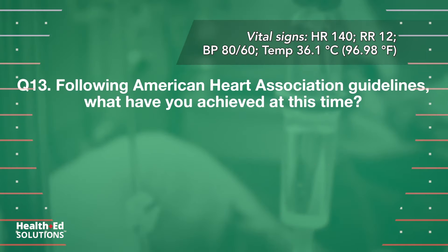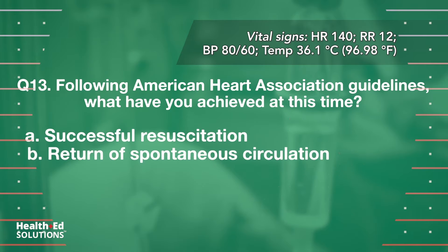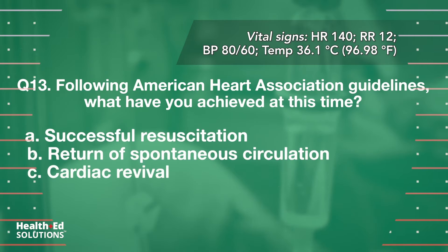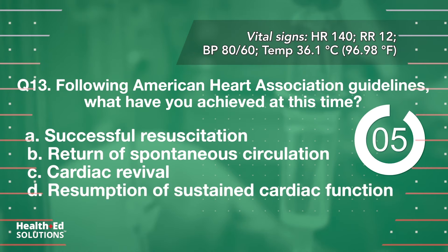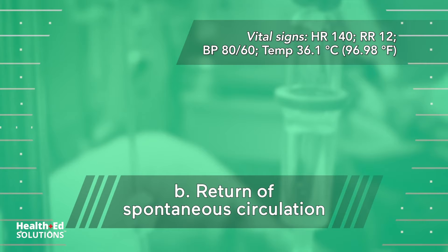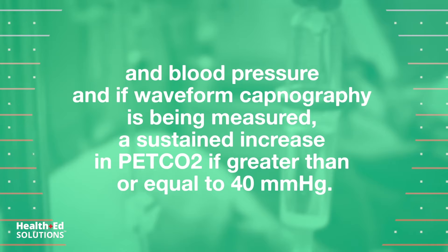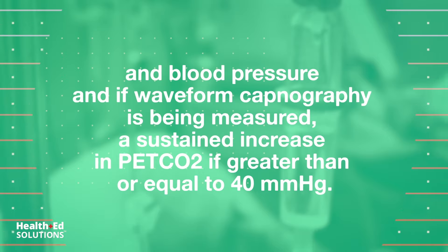Question 13: Following American Heart Association guidelines, what have you achieved at this time? A. Successful resuscitation. B. Return of spontaneous circulation. C. Cardiac revival. D. Resumption of sustained cardiac function. Correct answer B: Return of spontaneous circulation. American Heart Association guidelines suggest return of spontaneous circulation if a cardiac arrest patient has regained a pulse and blood pressure, and if waveform capnography is being measured, a sustained increase in PETCO2 greater than or equal to 40 millimeters of mercury.